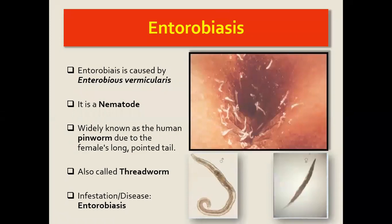Today we are going to look at a helminthic infection called enterobiasis. Enterobiasis is basically a worm infestation caused by a worm called Enterobius vermicularis, which is a nematode. Enterobius vermicularis is also called a pinworm, because of the morphology of the pointed tail of the female worm. It is also called a threadworm. So it can be called threadworm, pinworm, or Enterobius vermicularis, and the infestation by this worm is called enterobiasis.